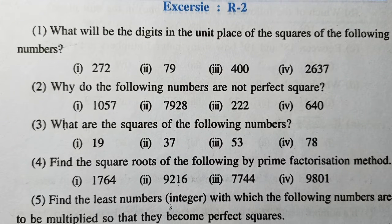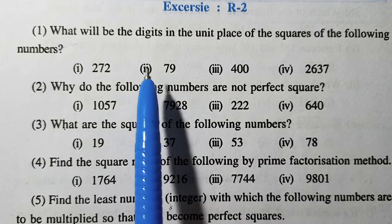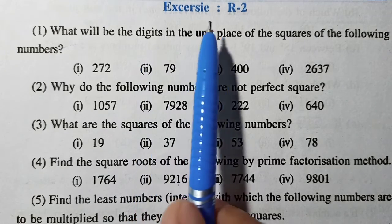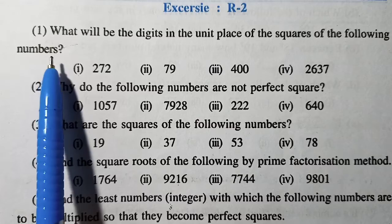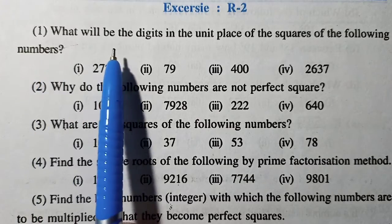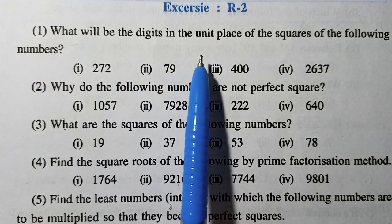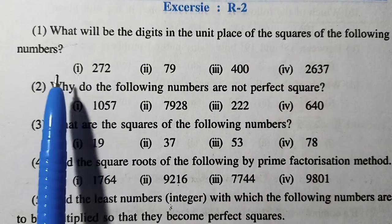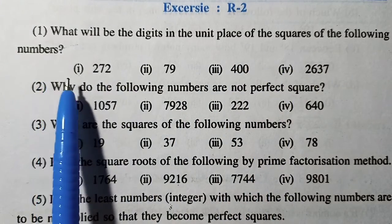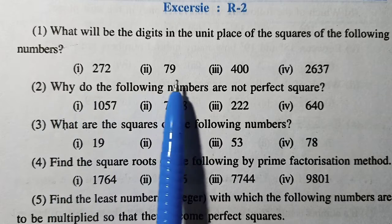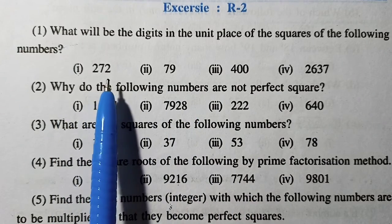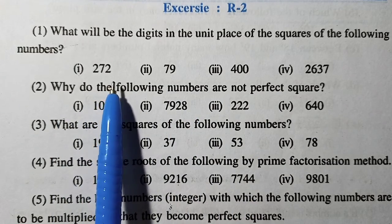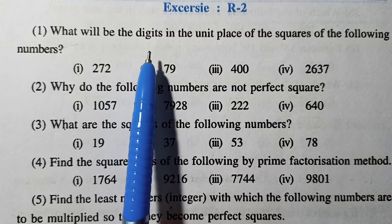Hi friends, in this video we shall solve the questions given in Exercise R2 from Class 10 Mathematics. Question number one: what will be the digits in the unit place of the square of the following numbers? Here we are given some numbers and we are asked, if you make the square of this number, what will be the digit in the unit place?